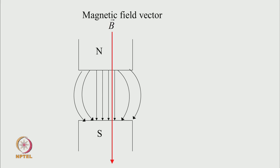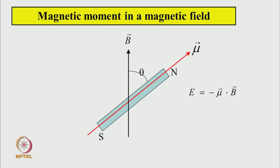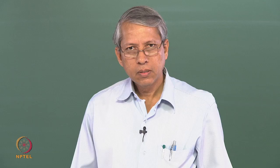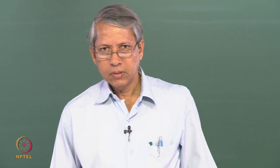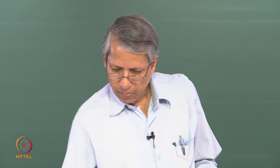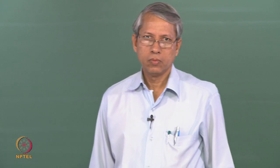The magnetic field is also a vector quantity, showing the direction of magnetic field lines starting from the north pole and going to the south pole. When I have a magnetic moment and place it in a magnetic field, it will orient according to the allowed values of the angular momentum.